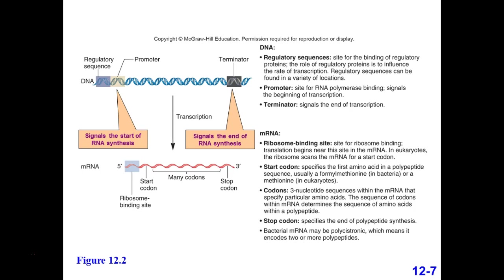Messenger RNA is read in groups of three nucleotides by the ribosome. AUG is what we call a codon — it's three nucleotides, and it is the start codon. It does code for an amino acid — the ribosome puts methionine there. Then it keeps reading that sequence in groups of three nucleotides. We've translated out that code: if you have AUG, you know that's where the ribosome starts and it's going to put methionine there.